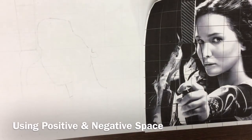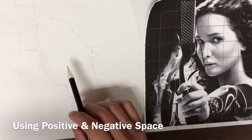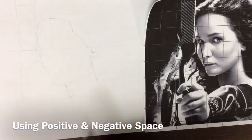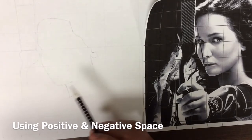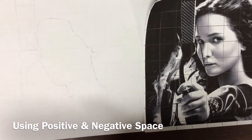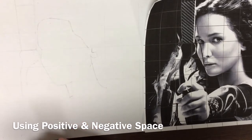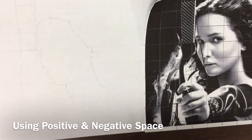The first demonstration showed how to use fractions in relationship to your grid to get proper proportion. This demonstration will show how to use both positive and negative space to do the same thing. You're going to be using all these techniques together whenever you're drawing your image — I'm just going to break them down one at a time.